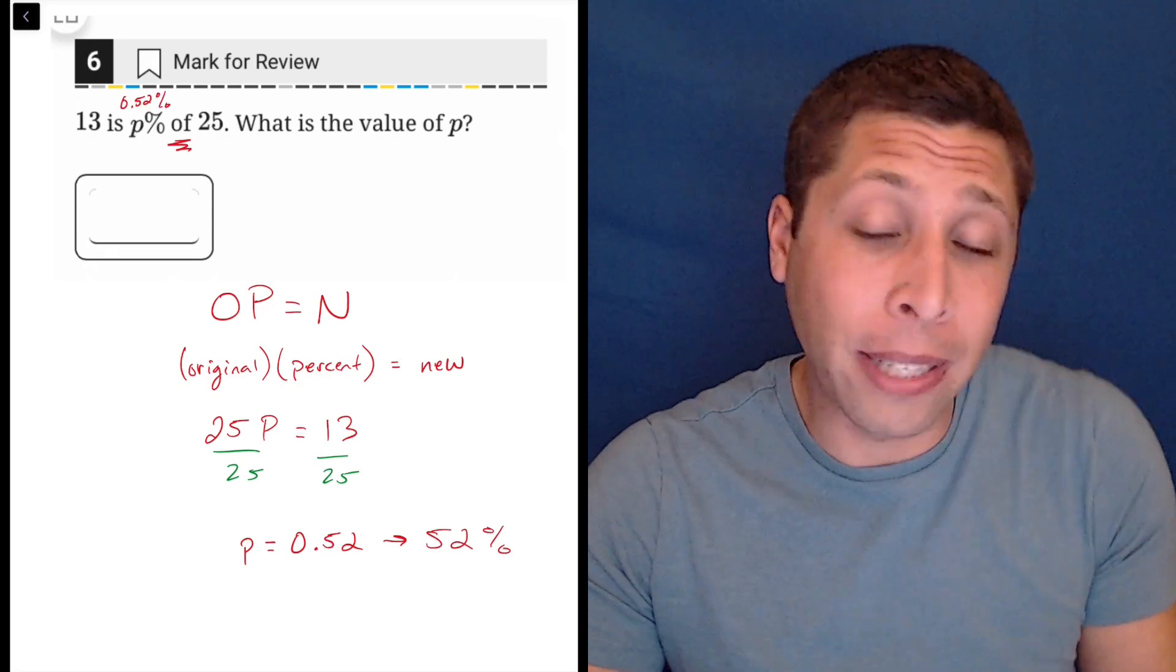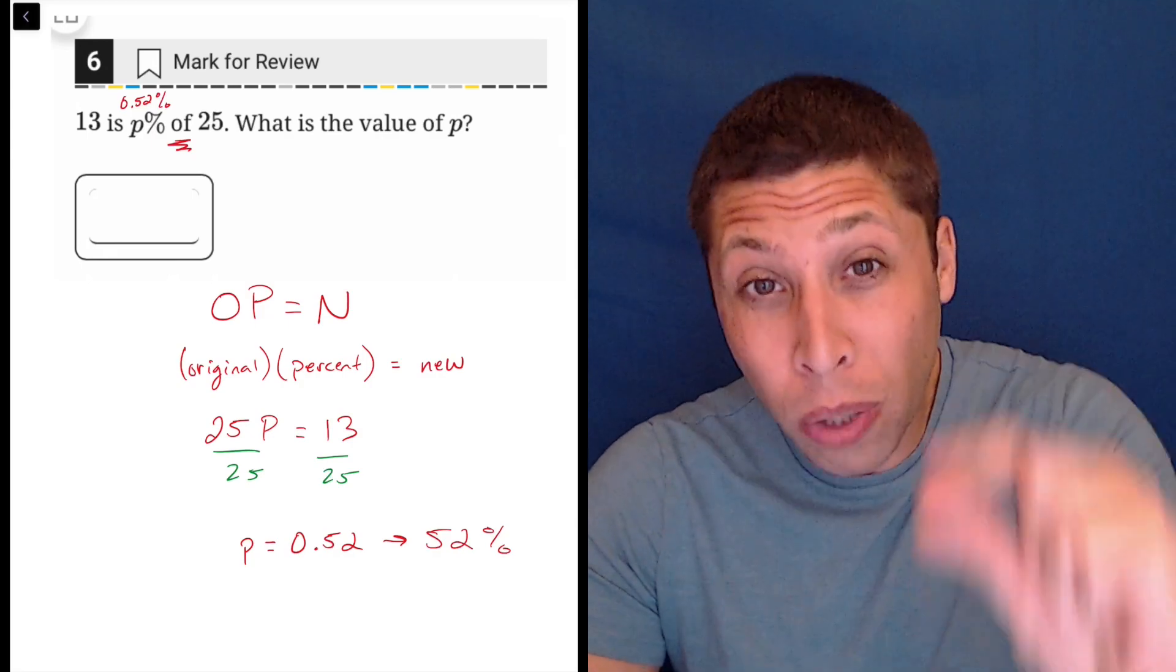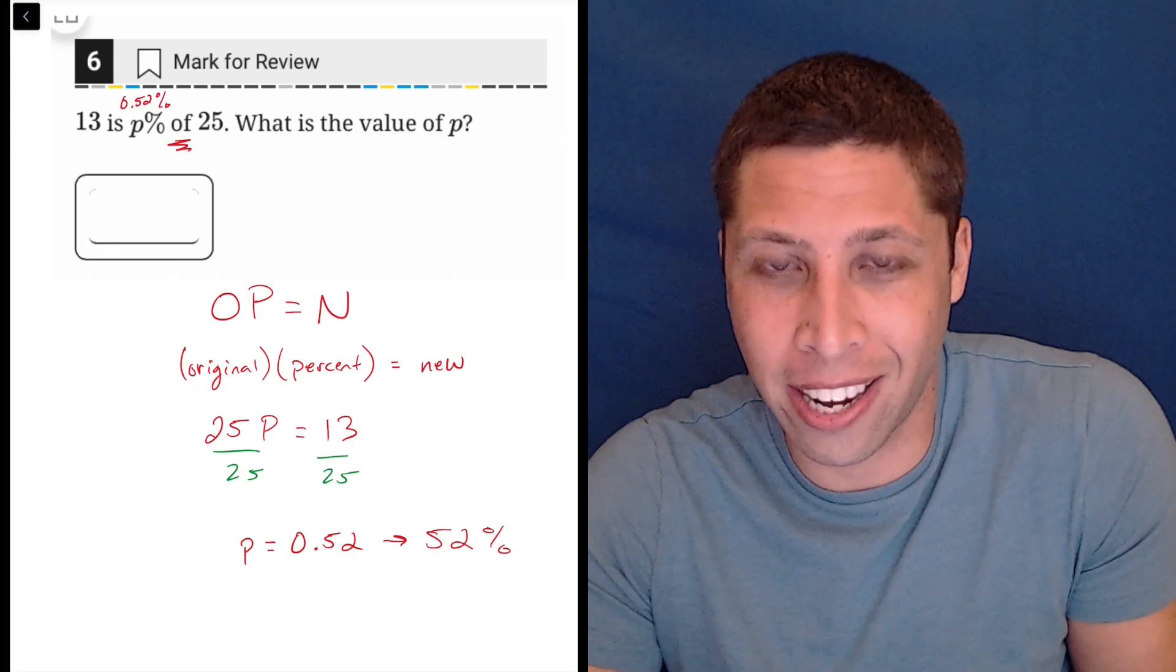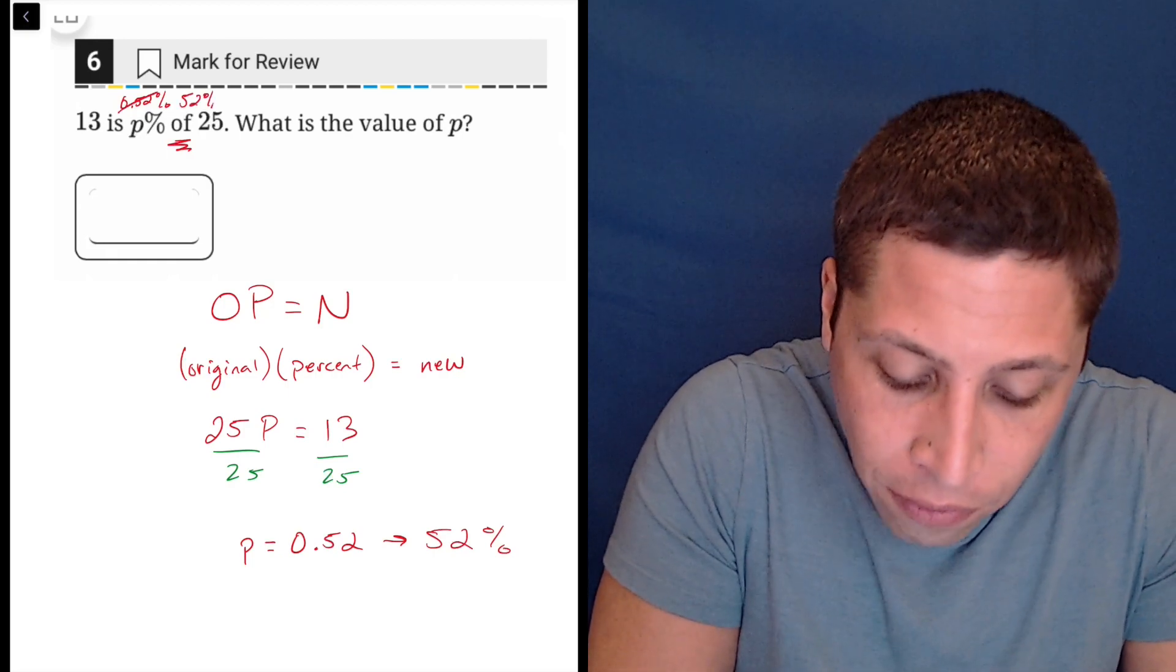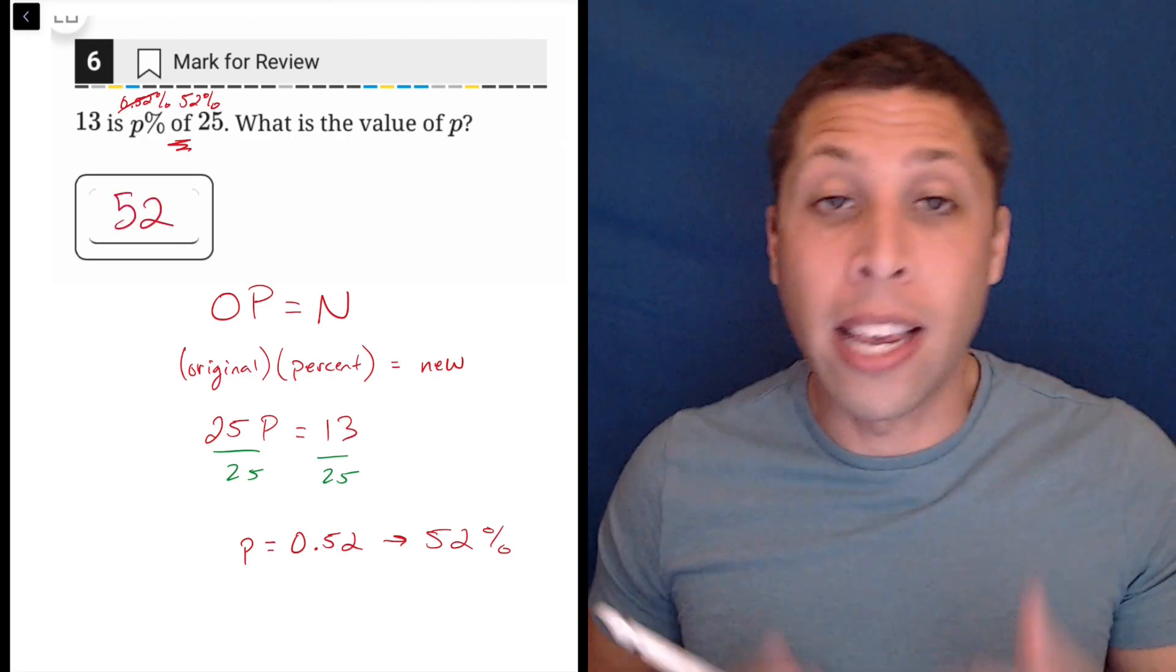13 is approximately half of 25, but 0.52 percent is a really small percentage of something. So we know we want to say it in a different way. We want to say, okay, 13 is 52% of 25. So 52 is your answer here.